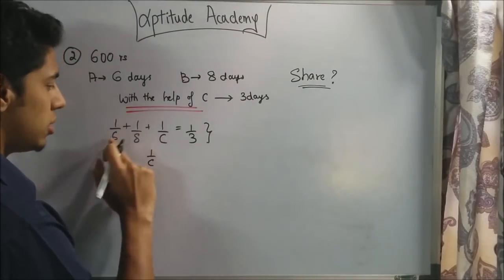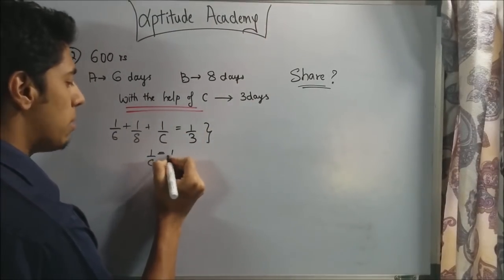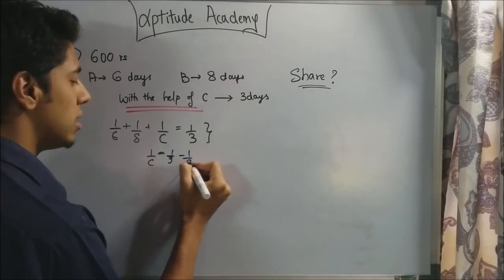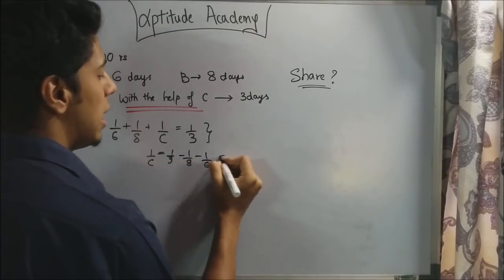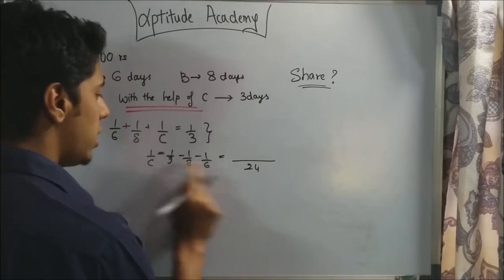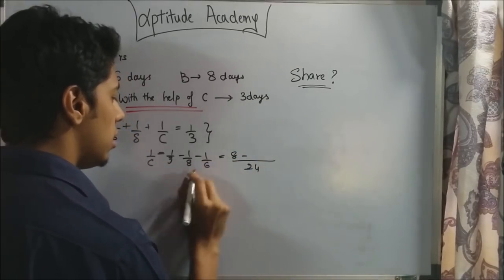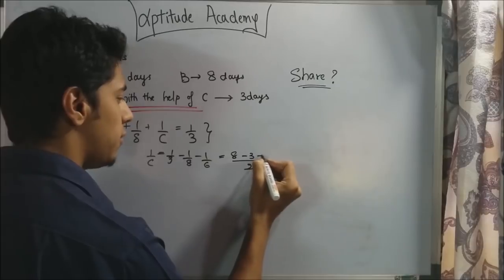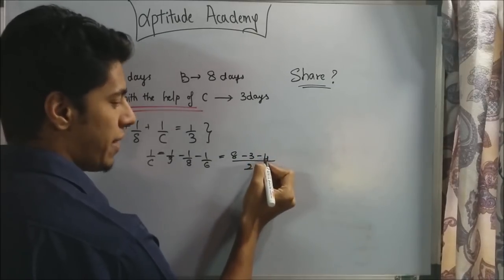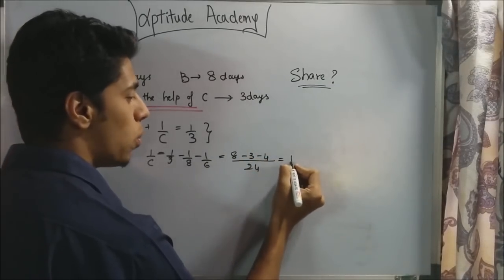So 1 by C, we keep it on this side, shift this to the other side. So 1 by 3 minus 1 by 8 minus 1 by 6. If we take an LCM, this will be 24. This will be 8, 3 is at 24, or 6, 4 is at. So 8 minus 7 is 1. So 1 by 24.